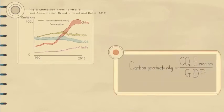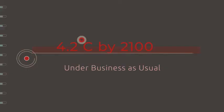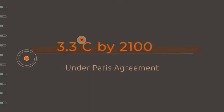However, increases in carbon productivity have been slowing down rather than increasing. Based on current trends, around 4.2 degrees by 2100 is expected, while if all countries met their obligations under the Paris Agreement, this would lead to roughly 3.3 degrees.